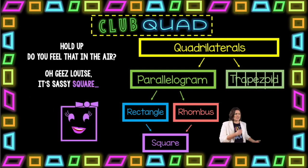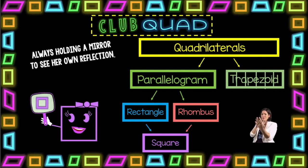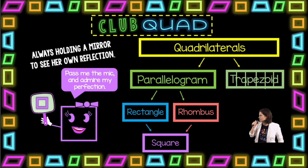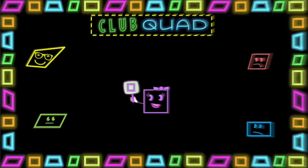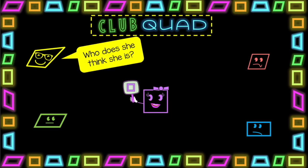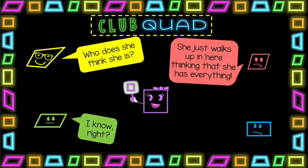Hold up. Do you feel that in the air? Ah, geez Louise, it's sassy square. Always holding up a mirror to see her own reflection. Pass me the mic and admire my perfection. Who does she think she is? I know, right? She just walks up in here thinking that she has everything. Well, she kind of does.